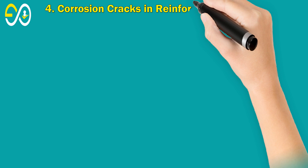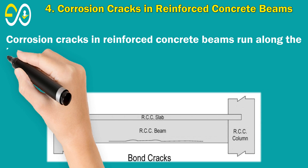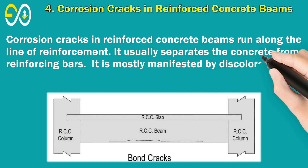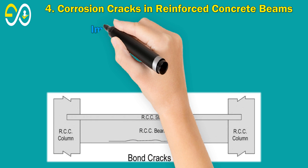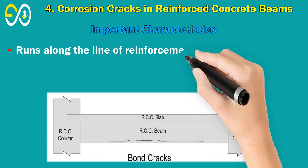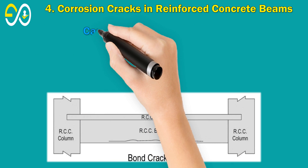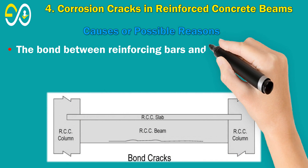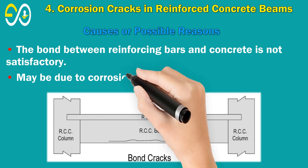4. Corrosion Cracks in Reinforced Concrete Beams. Corrosion cracks run along the line of reinforcement and usually separate the concrete from the reinforcing bars. They are mostly manifested by discoloration of paint or stains of rust. Important Characteristics: Runs along the line of reinforcement; uniform width in general. Causes: The bond between reinforcing bars and concrete is not satisfactory, possibly due to corrosion of bars or fire damage.